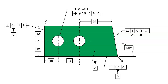A basic dimension does not say where a feature is. The basic dimensions shown here do not specify where the holes are. To know whether the holes are in the right place, we need a tolerance of position that, together with the basic dimension, says where the holes are allowed to be. A tolerance of position specifies a tolerance zone that is located by the basic dimensions.